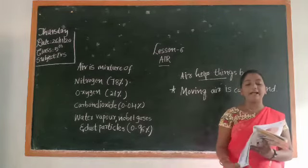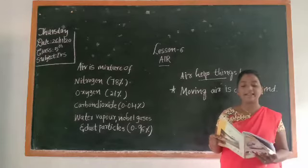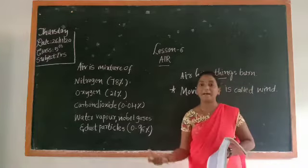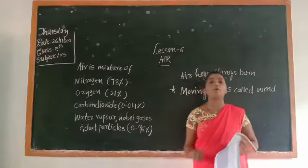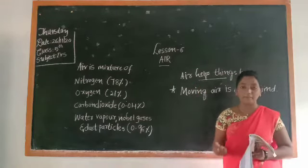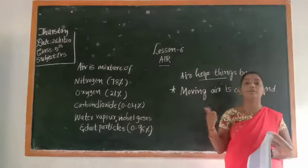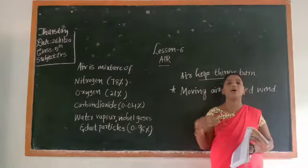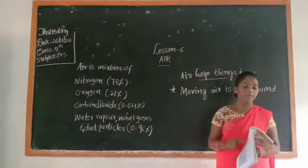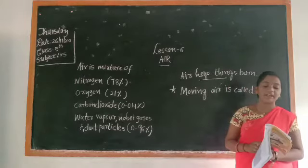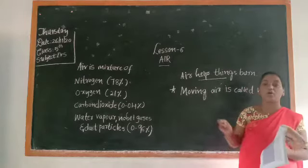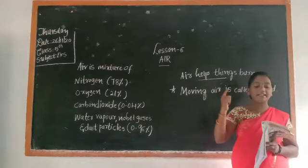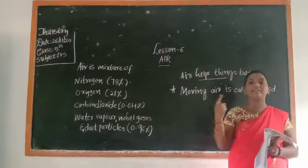A vehicle cannot move if the air inside the tire comes out. If the tire is punctured, the vehicle cannot move — because there is no air in the tire. Also, coconut trees swing in strong winds — when strong winds come, the coconut trees will swing.